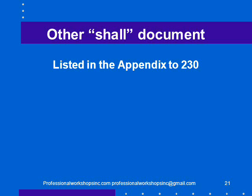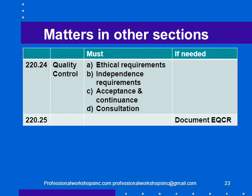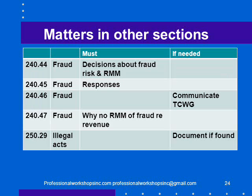There are other 'shall document' requirements, all listed in the appendix to Section 230. The engagement letter must be in writing and include certain matters, with certain things that happen if laws override sections in the engagement letter. Quality control, ethical requirements, independence, acceptance and continuance, consultation, and if needed you have to document an engagement quality control review. For fraud and illegal acts, you have to document decisions about fraud risk and risk of material misstatement — this duplicates the same requirement in Section 315. Your responses are also the same as 315. If you found fraud, you would communicate with those charged with governance.